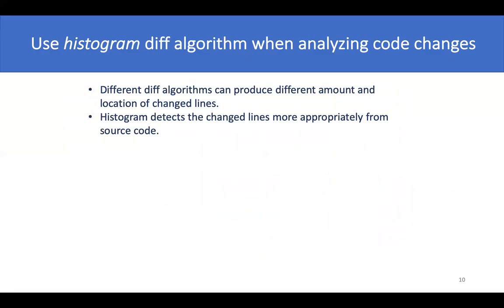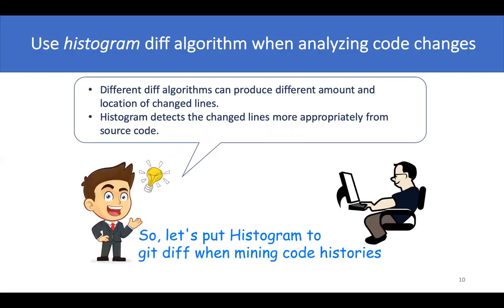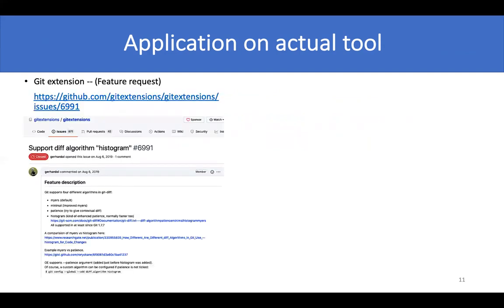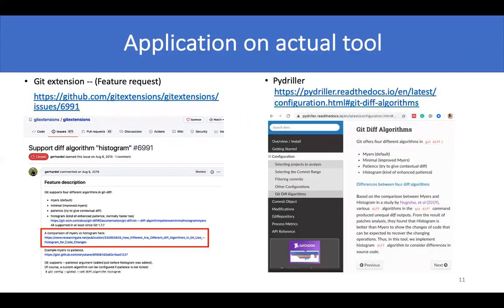Since diff is the fundamental tool for various software engineering tasks, considering the limitations and advantages of algorithms is important. Thus, currently, we recommend using the histogram algorithm when analyzing code changes. Our study provides new knowledge in the field and has been referenced by actual tools — for example, the first one in Git extension, and the second one, it has been implemented in PyDriller. Now PyDriller users can consider the histogram algorithm in their experiments.